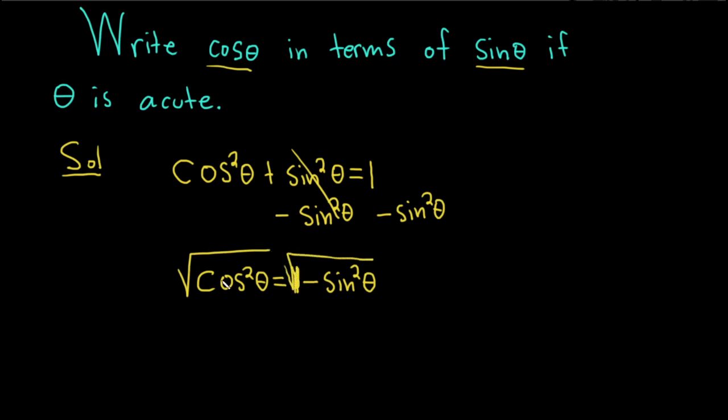And whenever you take the square root of any type of variable term squared, you do have to put a plus or minus. So you have cosine theta equals plus or minus the square root of 1 minus sine squared theta.